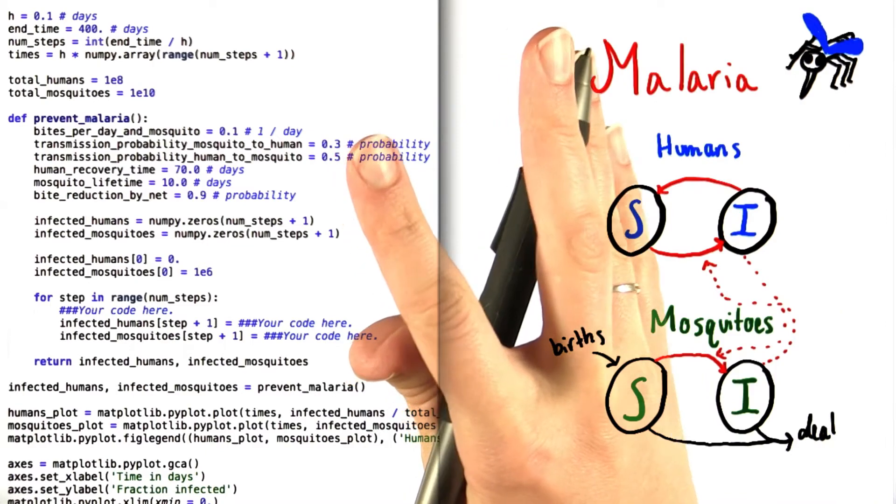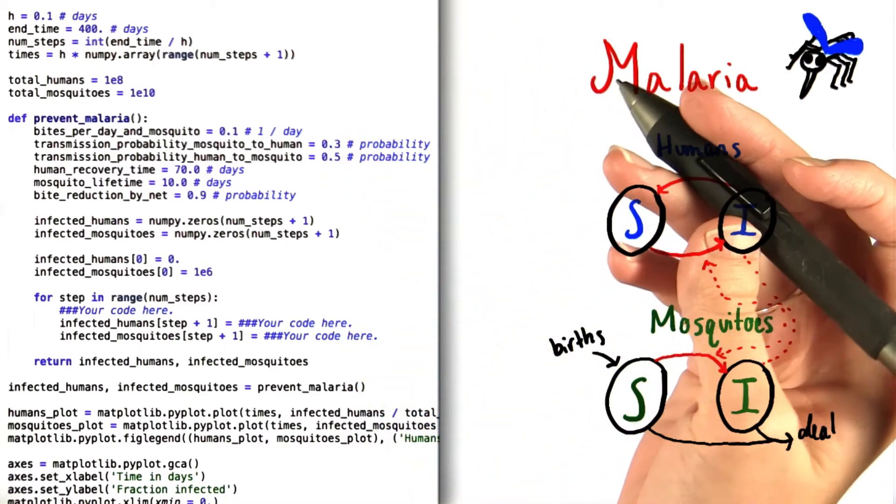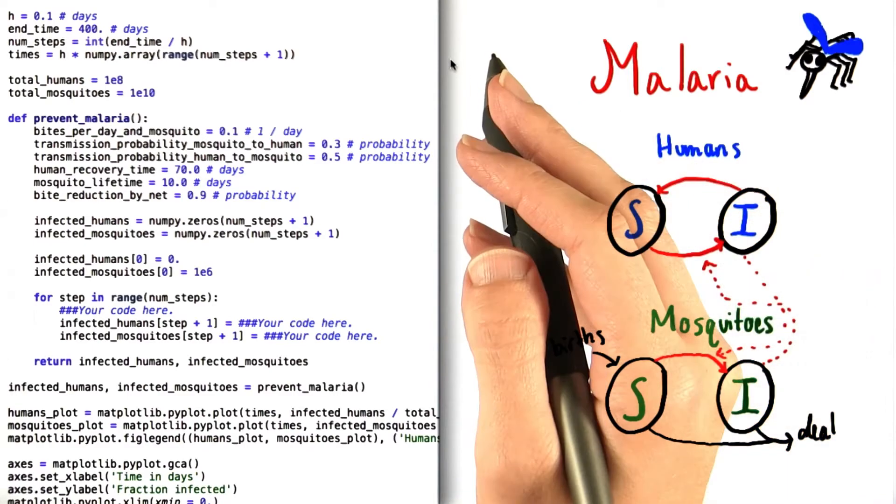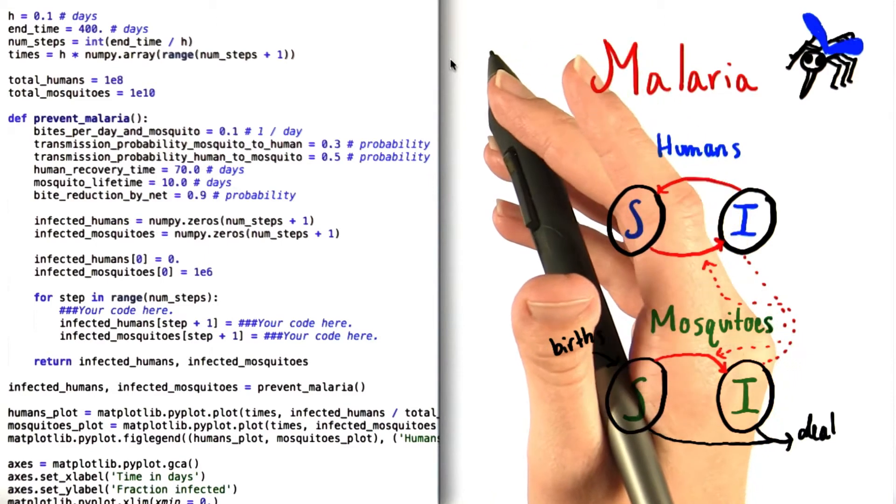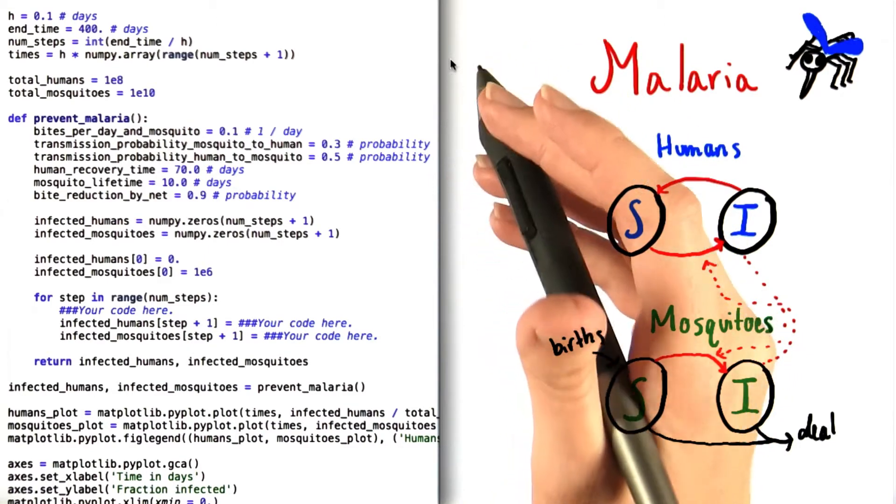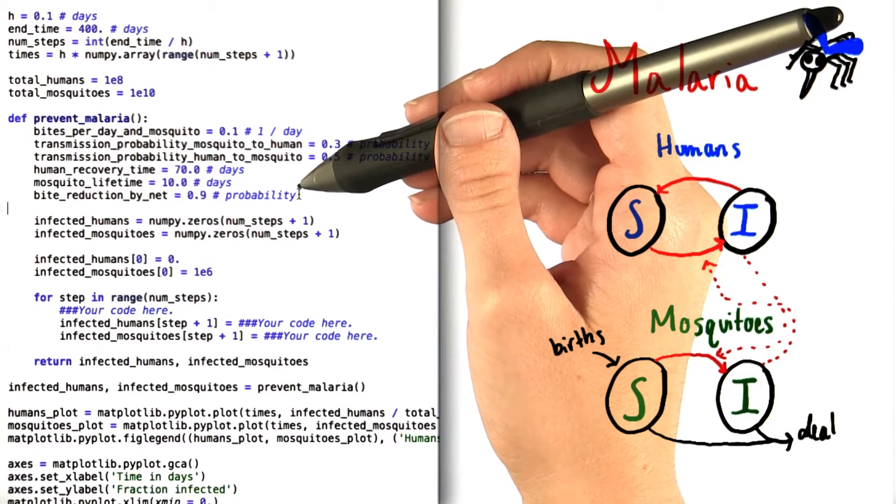In order to slow the spread of the disease, we're going to make people start using mosquito nets in their houses so they can avoid being bitten as often. We're going to introduce the nets after 100 days, and they immediately decrease the probability of a person getting bitten by 90%, as we can see from the constant that we've defined right here, called bite reduction by net.